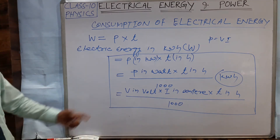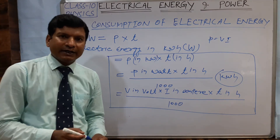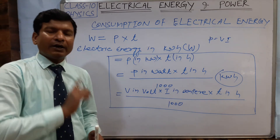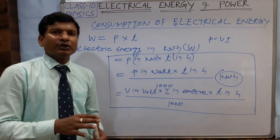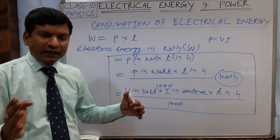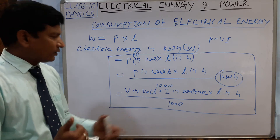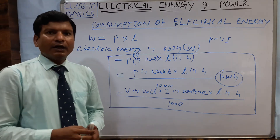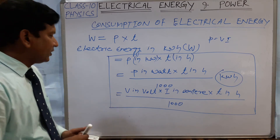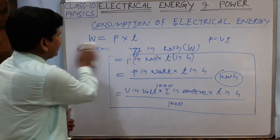Remember that the electric energy consumed at home is calculated in the unit kilowatt hour. Kilowatt hour is the unit in which we pay the cost of electricity. The electric bills we receive are calculated in the unit of kilowatt hour. Here is an example.